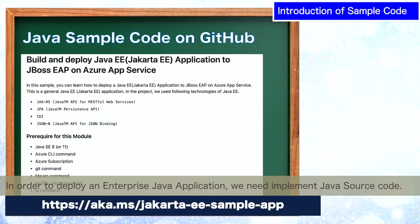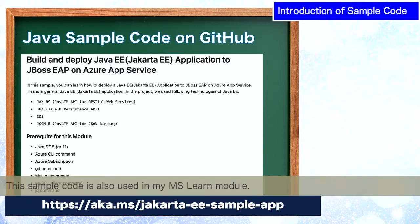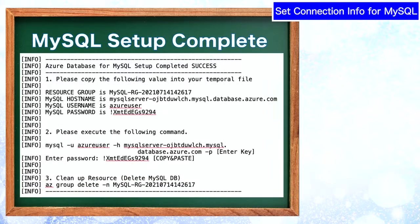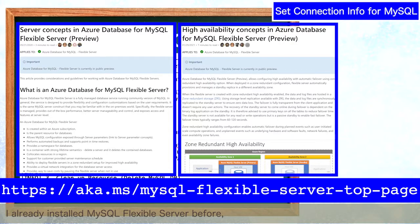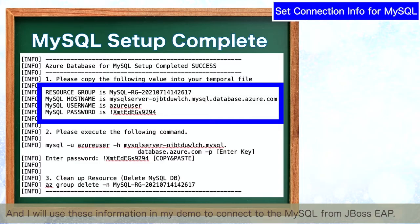In order to deploy an enterprise Java application, we need to implement the Java source code. In this time, I already created the sample code, and I will use the following sample code — this is also used in my MSLAM module. I already installed the MySQL Flexible Server before, because it will take a really long time to create the MySQL instance. The instance is located in this resource group, and I will use this information in my demo.